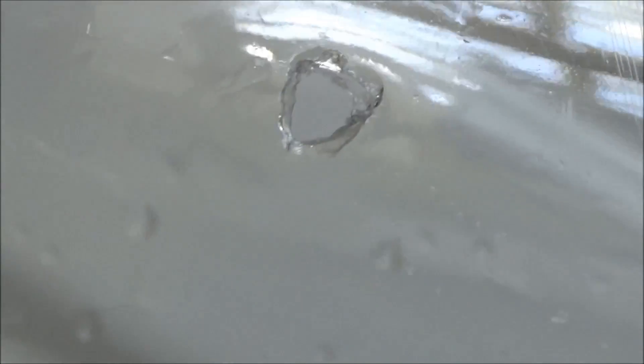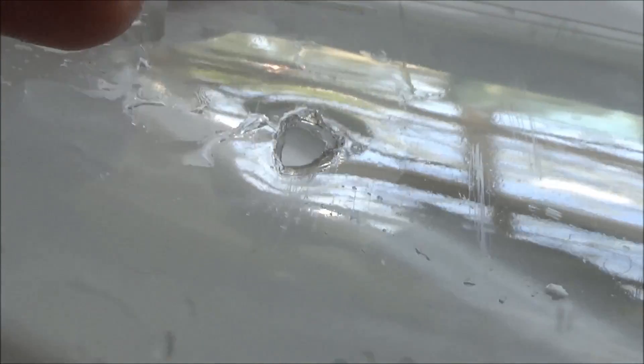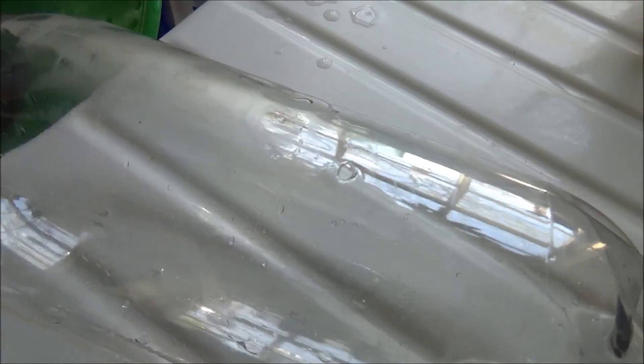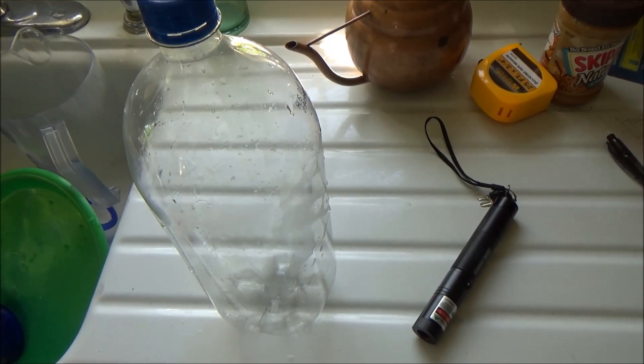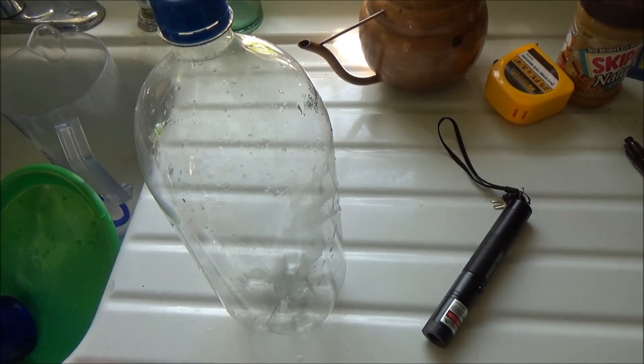The first thing you're going to do is cut a very small hole using a knife or some scissors. You're going to do it about maybe a little lower than halfway down on the side of the bottle. You can see I put mine right here.